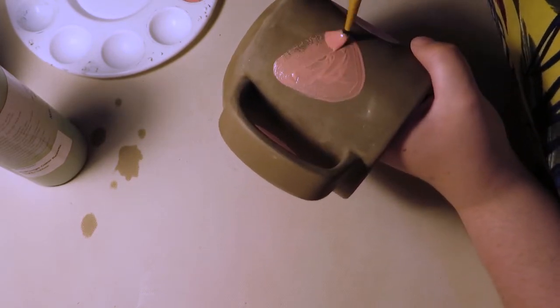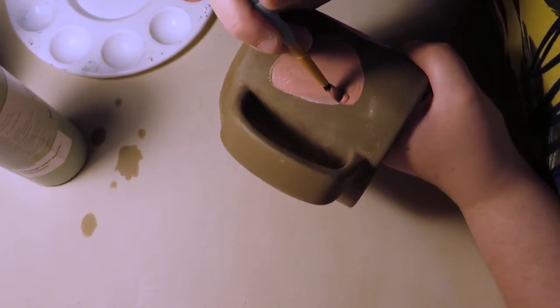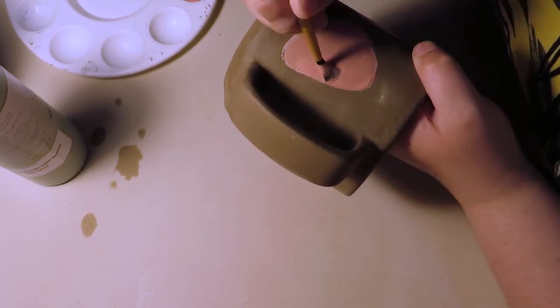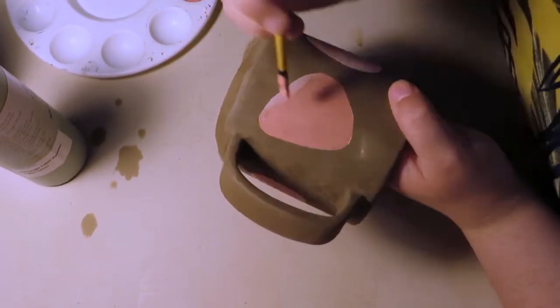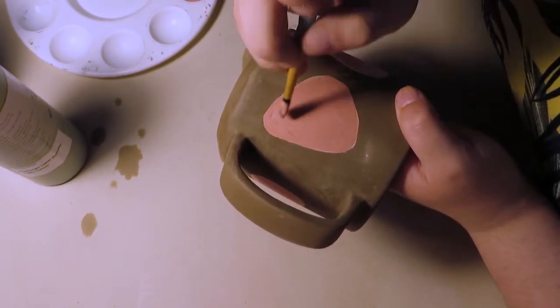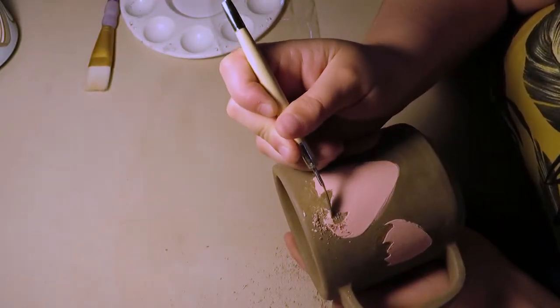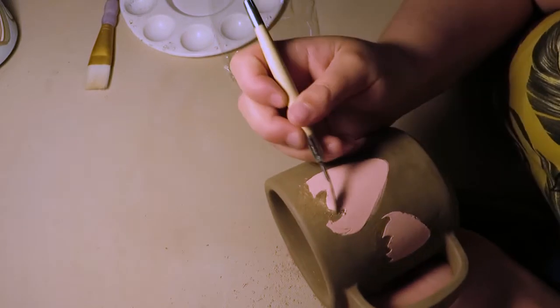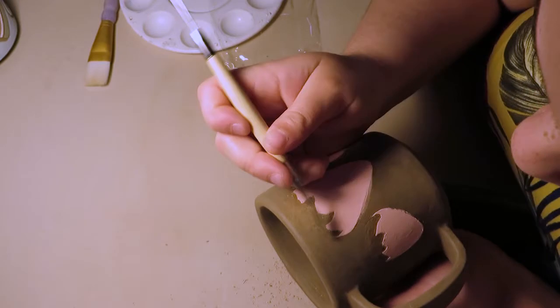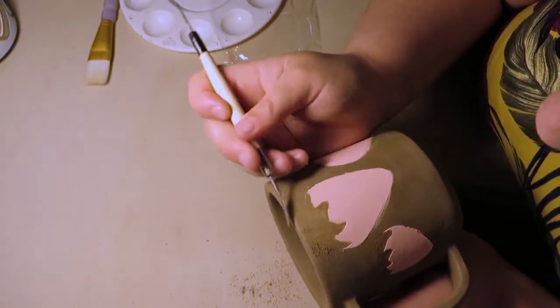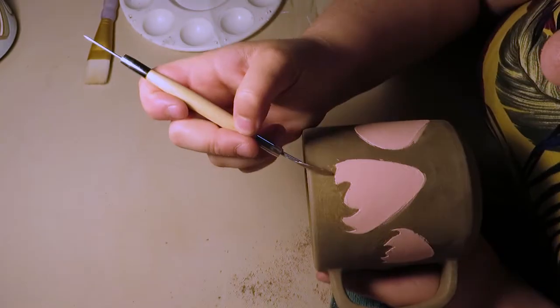The second step is to remove the red paint from the area you want to add your green paint to. This isn't necessary, but I'm doing it to make sure my green will be very vibrant, because if I were to just paint over the red, the red might shine through the green paint and dull it.